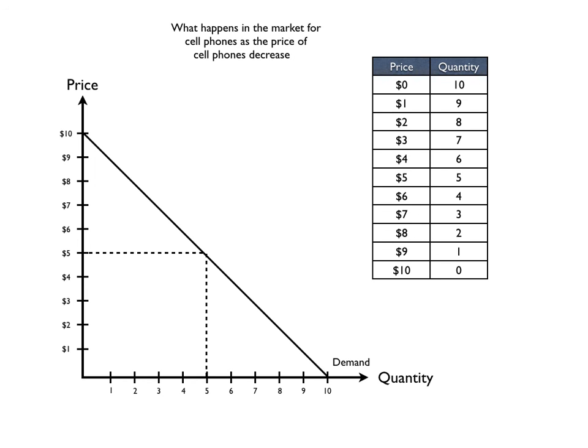Now one last one we'll look at. What happens in the market for cell phones as the price of cell phones decreases? Again, this is the important distinction between a change in demand and a change in quantity demanded. The model we have here, this is the market for cell phones, and what we want to find out is what happens in this market as the price of cell phones decreases. That would be movement along this demand curve. So therefore, there would be no change in demand. It would be an increase in quantity demanded caused by the lower price of cell phones.